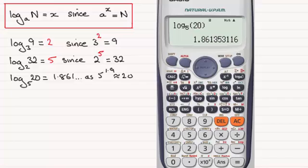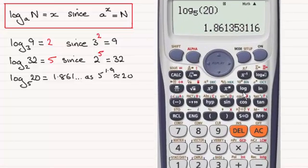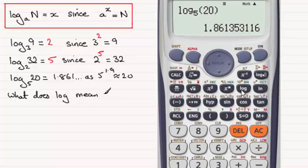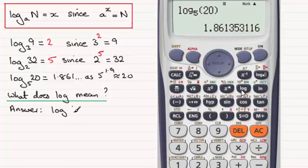Now another button you'll see on the calculator is just 'log' on its own, so that begs the question: what do we mean by log on its own? The answer is that log on its own just means log to base 10.